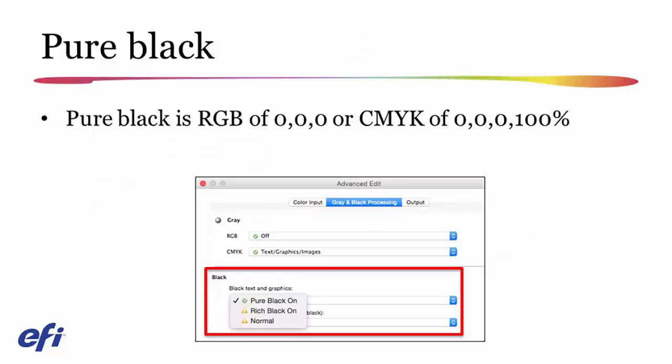We have additional controls in the advanced color section of gray and black for pure black. Pure black is a solid black — if defined in RGB it would be 0, 0, 0; if defined in CMYK it would be 0% cyan, magenta, and yellow with 100% black. To properly render solid blacks, I can use the black text and graphics setting and set it to pure black on. Pure black on results in all page objects that are solid black being printed with 100% black only on the output.